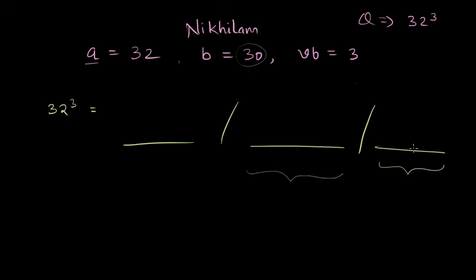So what is the rightmost part? Rightmost part is a cube of deviation D and this deviation is given by the number minus the base and in this case it is 2. So we will write cube of 2.